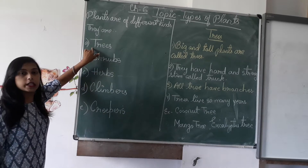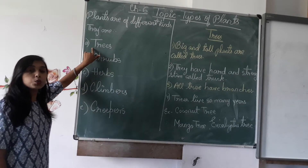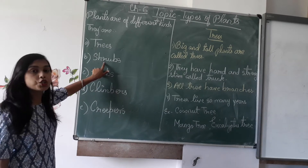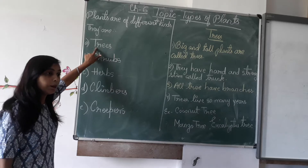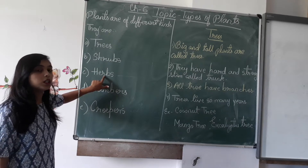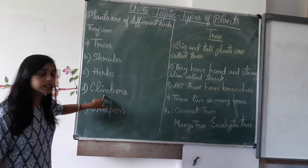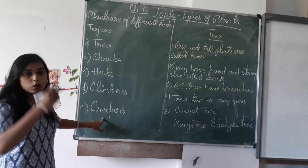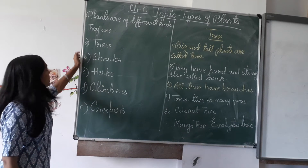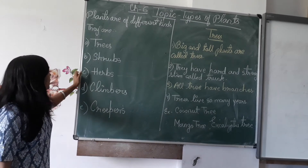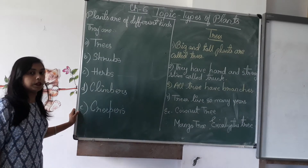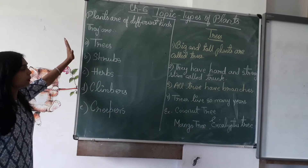The first one is tree. The second one is shrubs. Third is herbs. Fourth is climbers. Fifth is creepers. Again, to recall: the first is tree, second is shrub, third is herb, fourth is climber, and fifth is creepers. So these are the five categories of the plant.